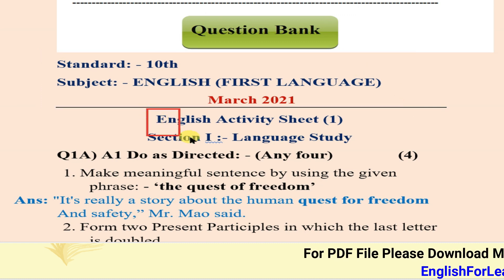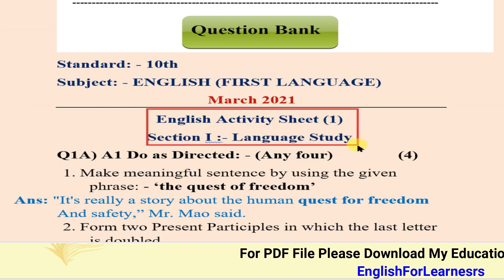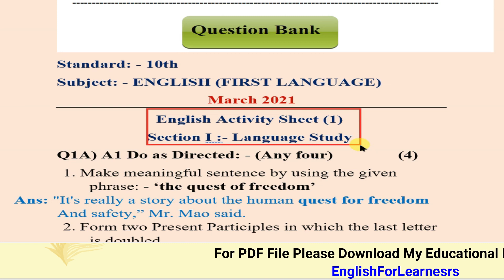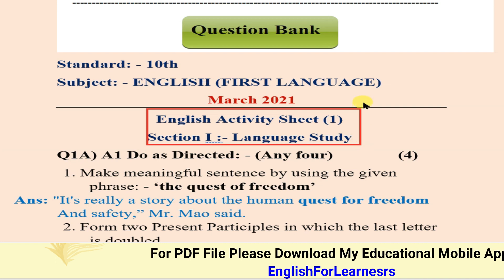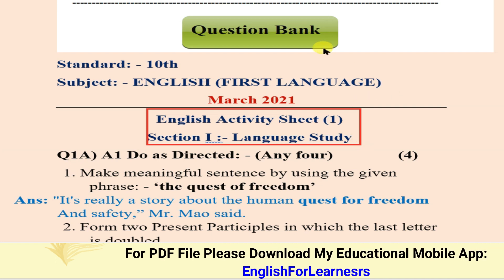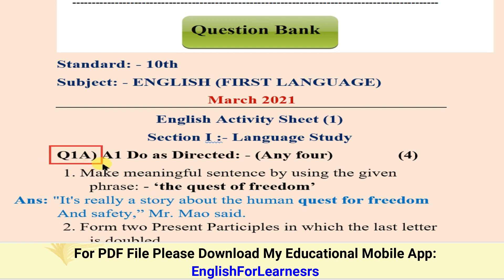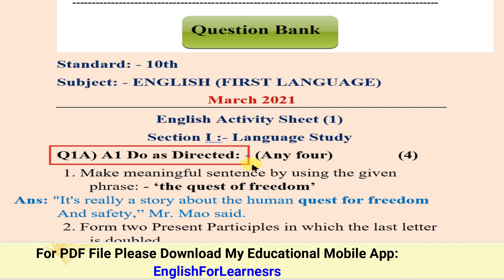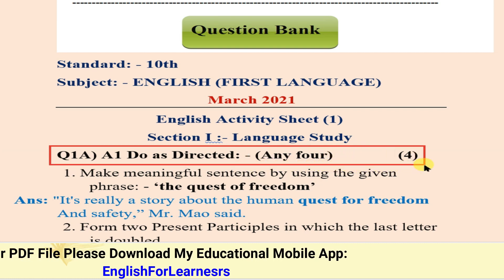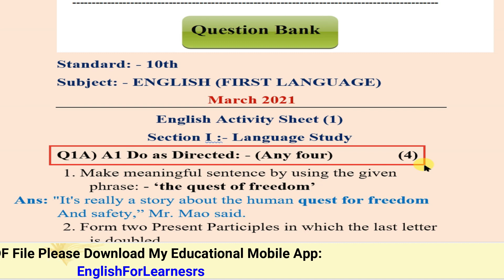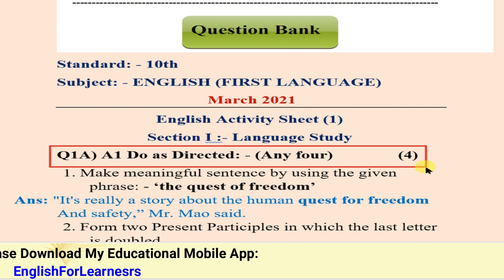This is the English activity sheet number one. Now let's begin section one, that is Language Study. As you know, activities related to language studies are grammatical activities. Let's begin question number one A. Do as directed, any four, for four marks. Six activities will be given; four activities should be correct to get four marks.